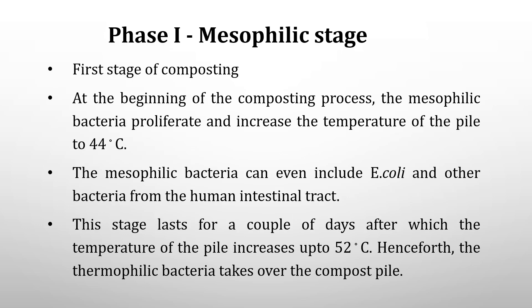In the mesophilic stage — the first stage of composting — mesophilic bacteria proliferate and increase the temperature of the pile to 44 degrees Celsius. The mesophilic bacteria can even include E. coli and other bacteria from the human intestinal tract. This stage lasts for a couple of days, after which the temperature of the pile increases up to 52 degrees Celsius, and the thermophilic bacteria take over the compost pile.